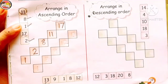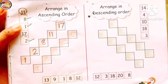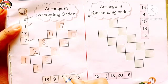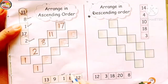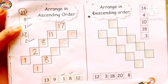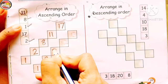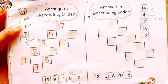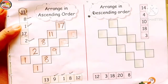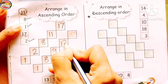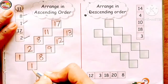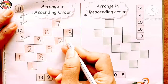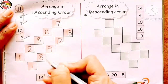Now look at the next example. Numbers are 13, 9, 1, 8, and 12. Which is the smallest number? Yes, definitely number 1. So first we write number 1. Next, number 8. Then number 9. Now 13 and 12 are left — so after number 9 we write number 12, then number 13. So look here: 1, 8, 9, 12, and 13. We have arranged these numbers in ascending order.